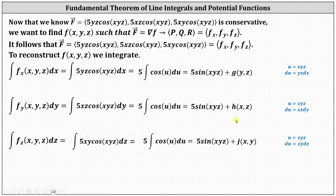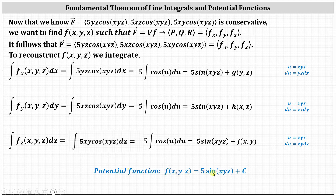Now we compare the three antiderivatives to reconstruct the potential function. Notice all three antiderivatives have the same term in common, and therefore the potential function is simply f(x, y, z) equals 5 sine(xyz) plus a constant c.